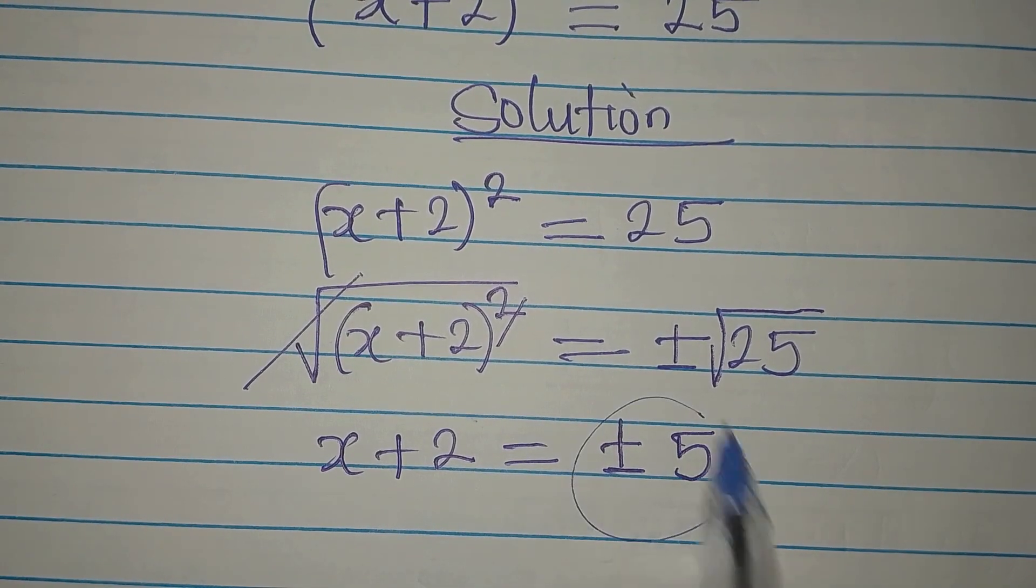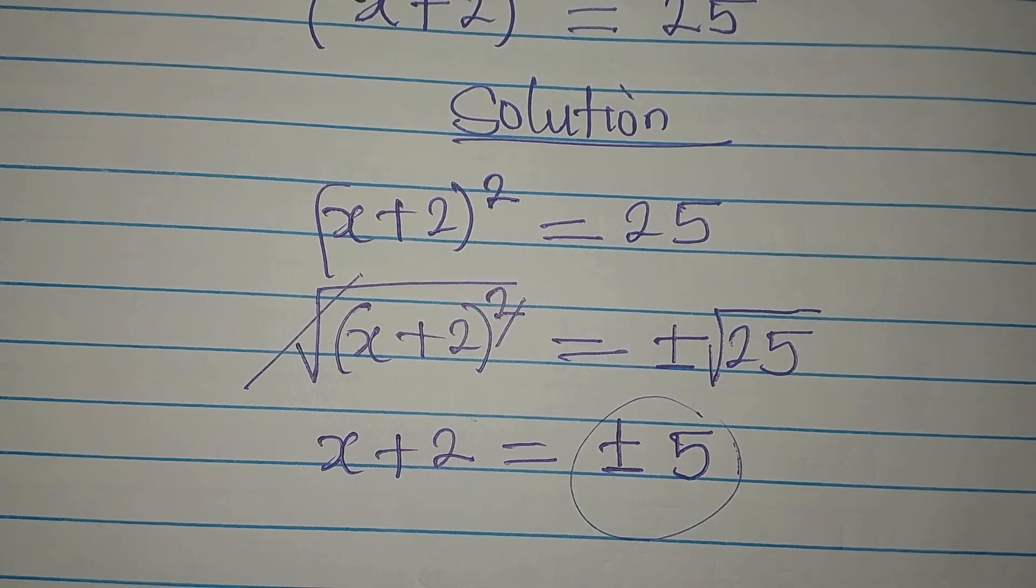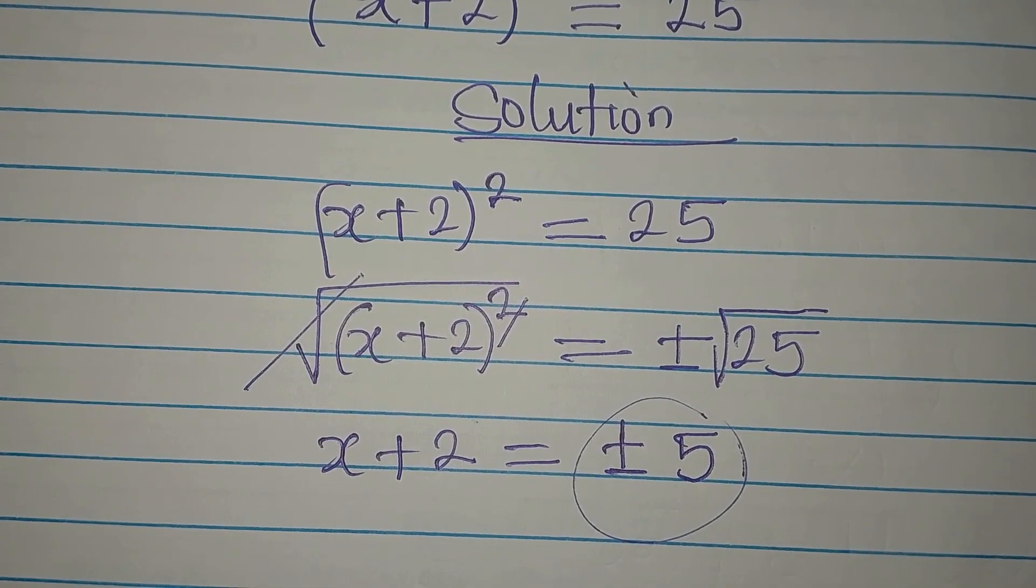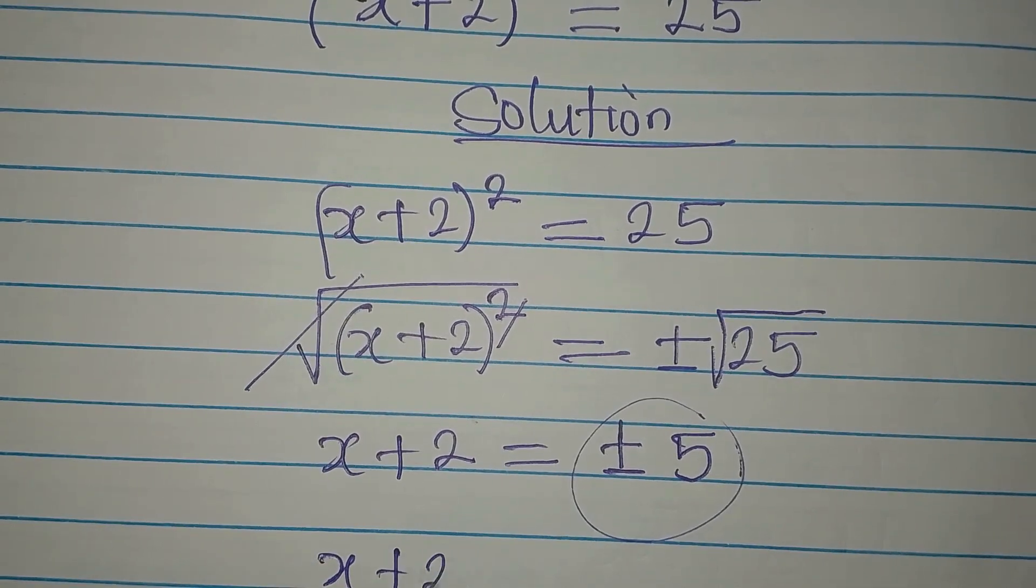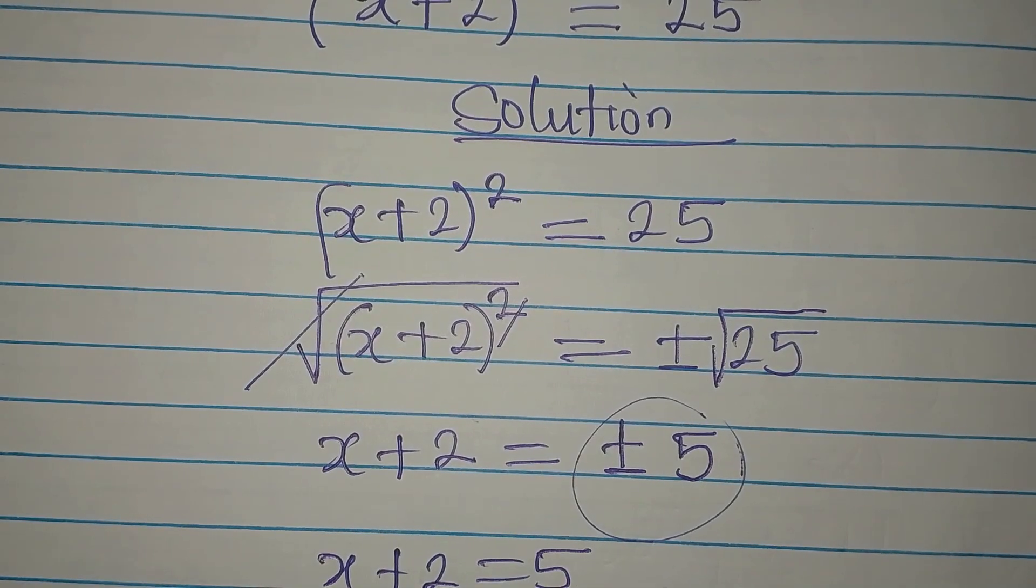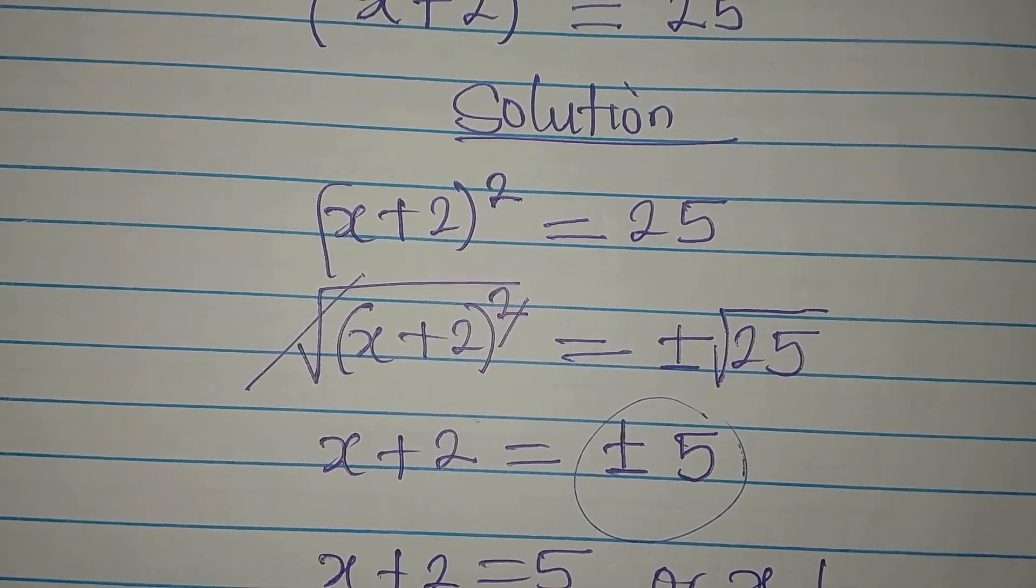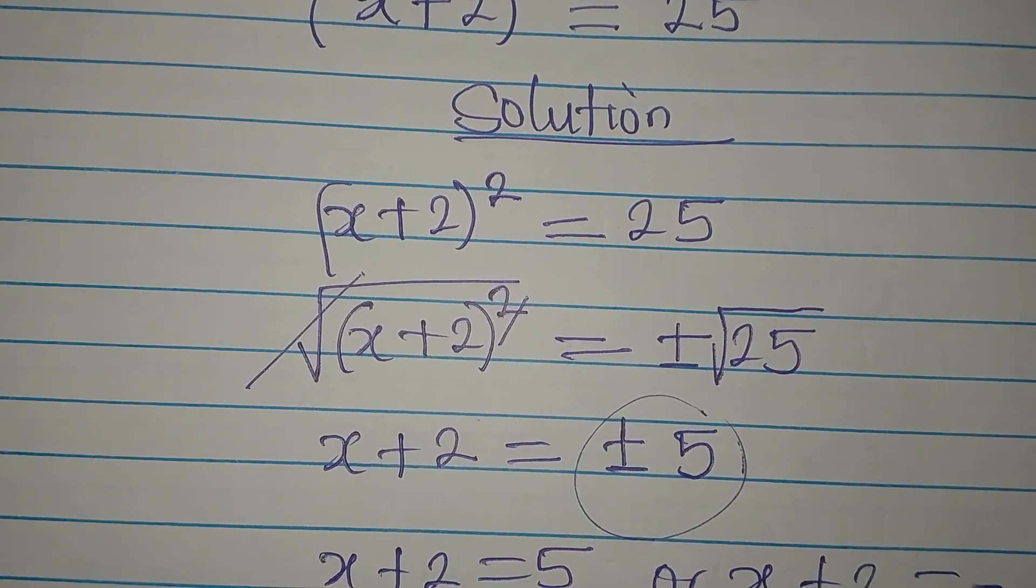From here, we're having two values. One is positive 5 and the other is negative 5. So we're going to have two equations then. x plus 2 equals 5, or x plus 2 equals negative 5.